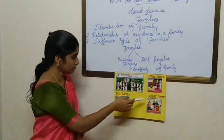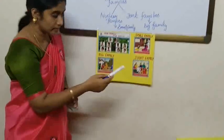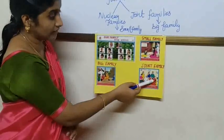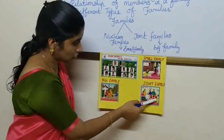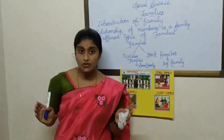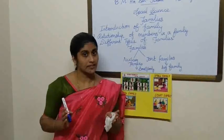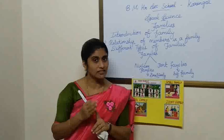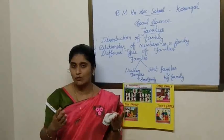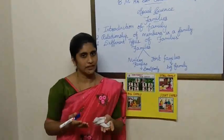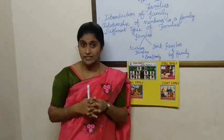Next, we will see joint family. Look at this picture. Here you can see grandfather, grandmother, father, mother, uncle, aunt, and children. In a joint family, a family that has more than one set of parents — grandparents, uncle, aunt, parents, sister, brother — all living together in the same house. They are called a joint family. Many generations live together only in a joint family.